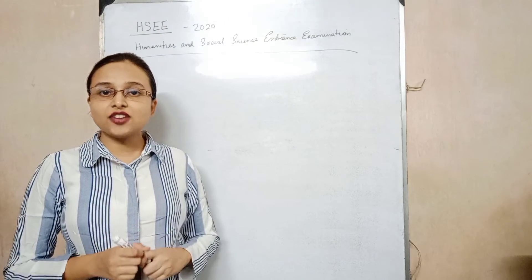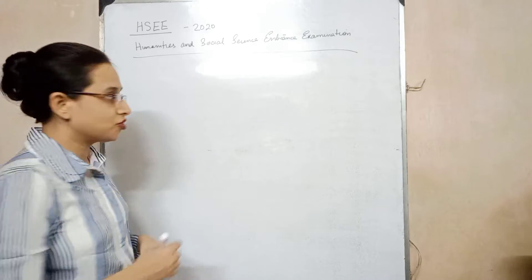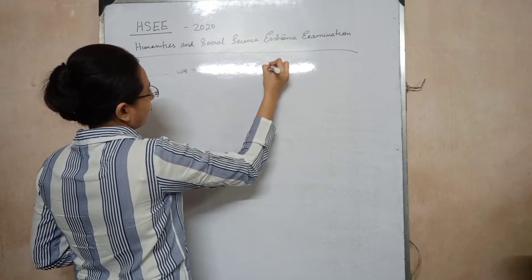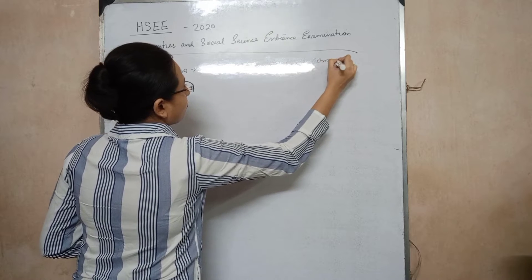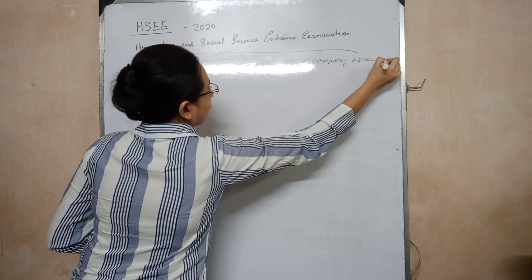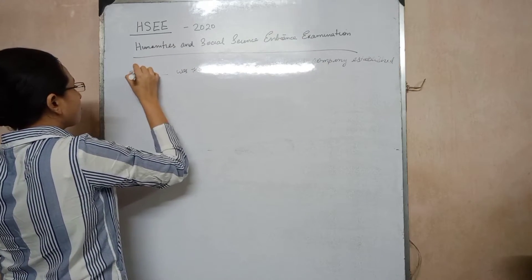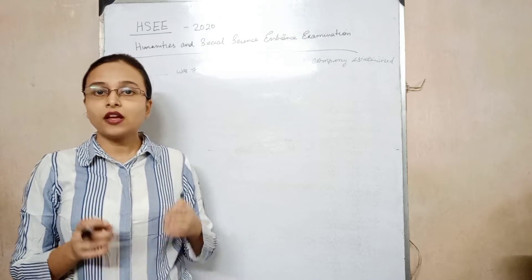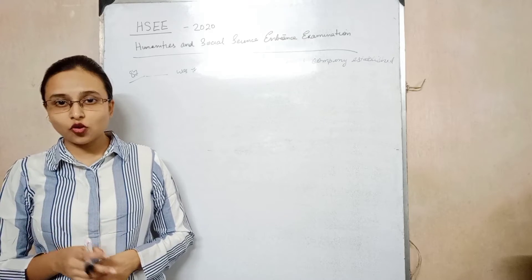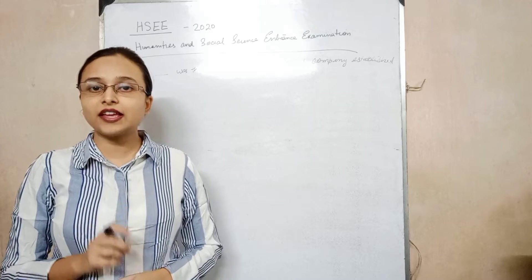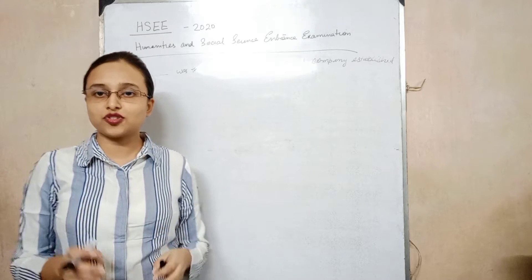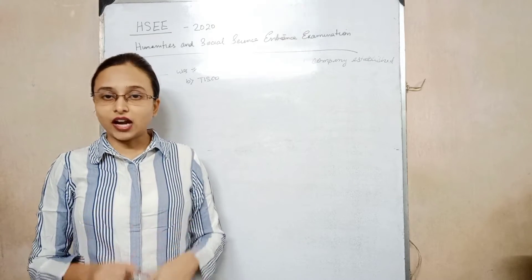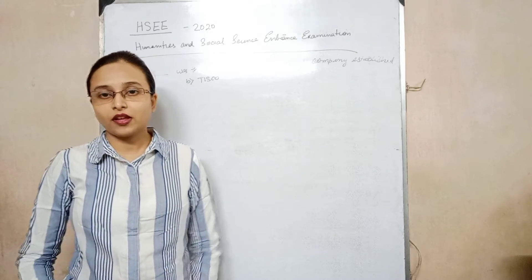Question number 87: Dash was the earliest iron and steel company established in India. The options are: A. IISCO. B. TISCO. C. Jindal Steel. D. Thalen Steel. The correct answer, which many of you must know, is TISCO — option B. The full form of TISCO is Tata Iron and Steel Company, which is India's pride.